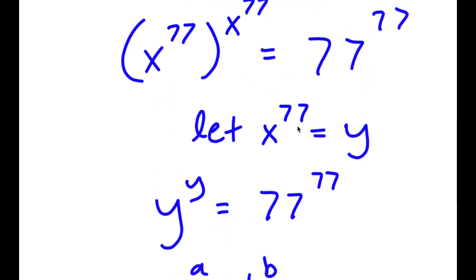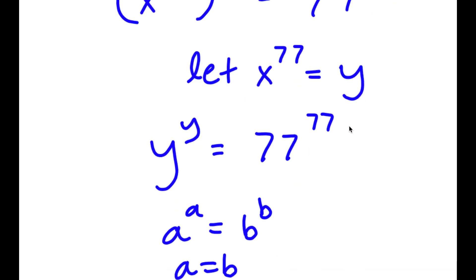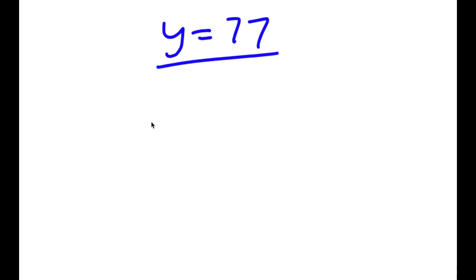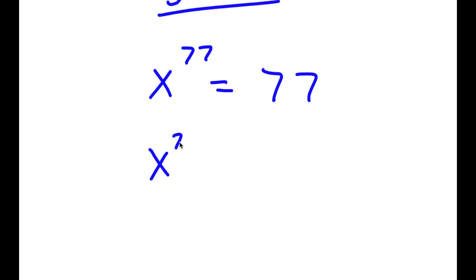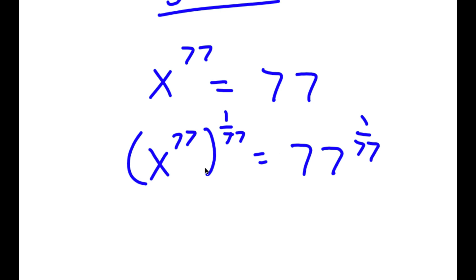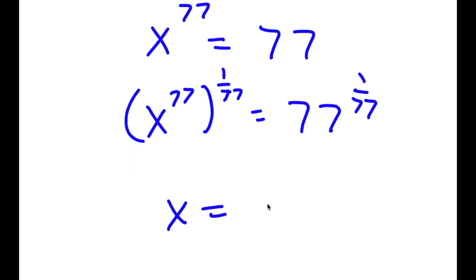Remember how we let x to the power of 77 equal y, so now I have x to the power of 77 is equal to 77. Taking the power of 1 over 77 on both sides, I get x is equal to the 77th root of 77.